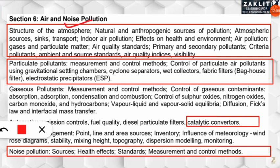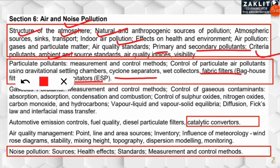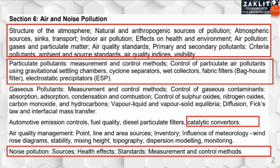Section 6 covers Air and Noise Pollution. Topics include the structure of the atmosphere, sources of atmospheric pollution, indoor air pollution (e.g., radon), and air quality standards — distinguishing primary and secondary pollutants. For particulate pollutants, control devices such as cyclone separators, fabric filters, and electrostatic precipitators and their mechanisms are important. For noise pollution, know the CPCB limits, sources, health effects, and measurement and control methods.